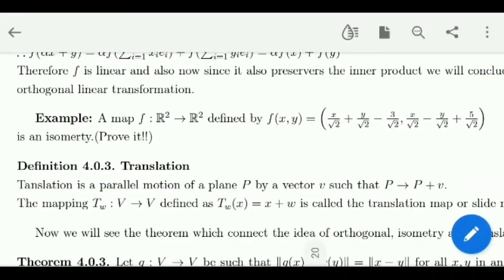For now I want to give you an example. This example, that map f from R² to R² defined like this, is an isometry. You guys have to prove this. So for this video, this is enough. In the next video, I already told which theorem I am going to discuss the proof of it. Thank you so much guys for watching this video. For any doubt or any suggestion, just write it in the comment box. I will get to you as soon as possible. Bye-bye.